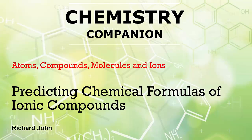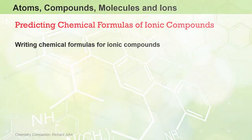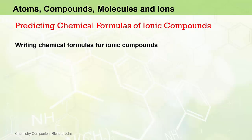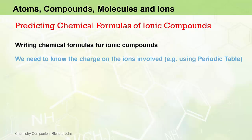In this video, we use our knowledge of how to predict the charge on individual ions to determine or predict the chemical formulas of ionic compounds containing those ions. To predict or write down the chemical formula of an ionic compound, we first need to know the charge on the individual ions that make up that compound. We can use the periodic table to work out the charge on many cations and anions.